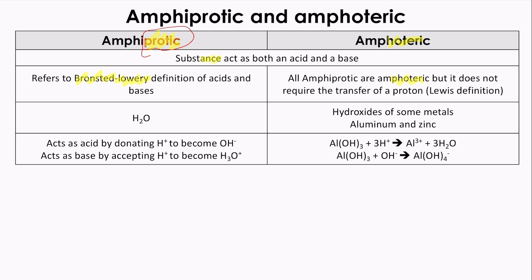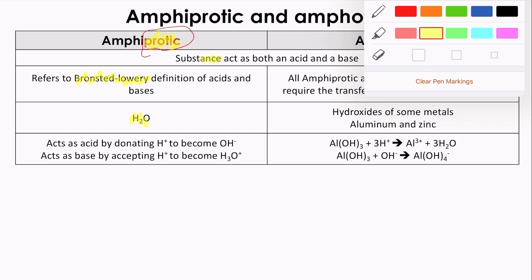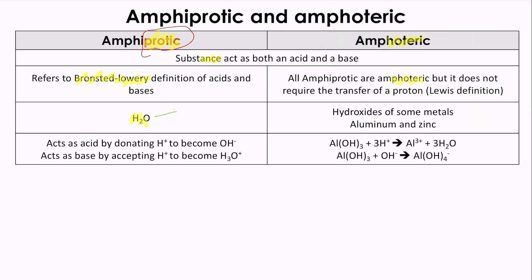So the clear example about amphiprotic substances is H2O. Why is that? Simply because H2O can gain a proton to make H3O positive or it can lose a proton to be OH negative. For that reason, it is amphiprotic.